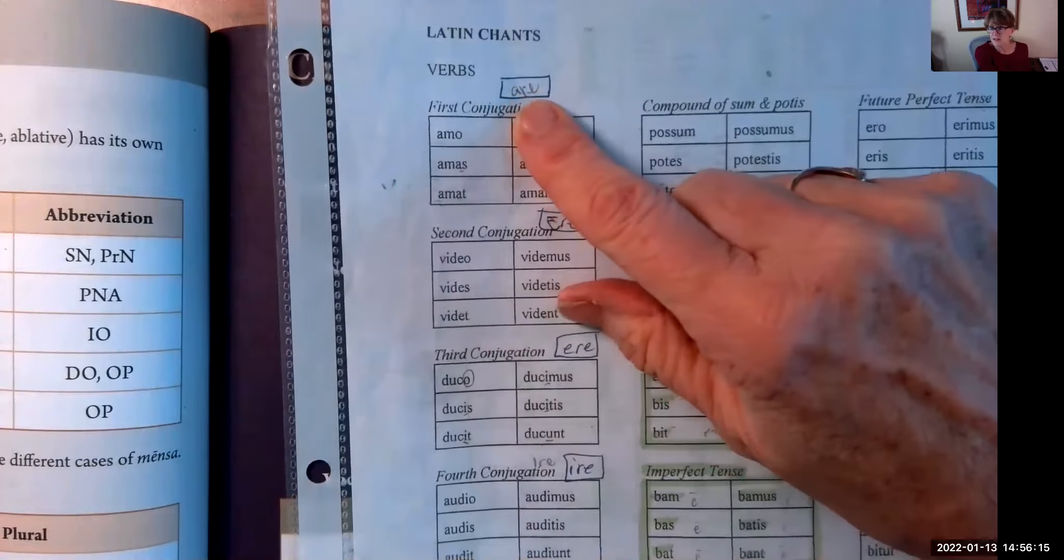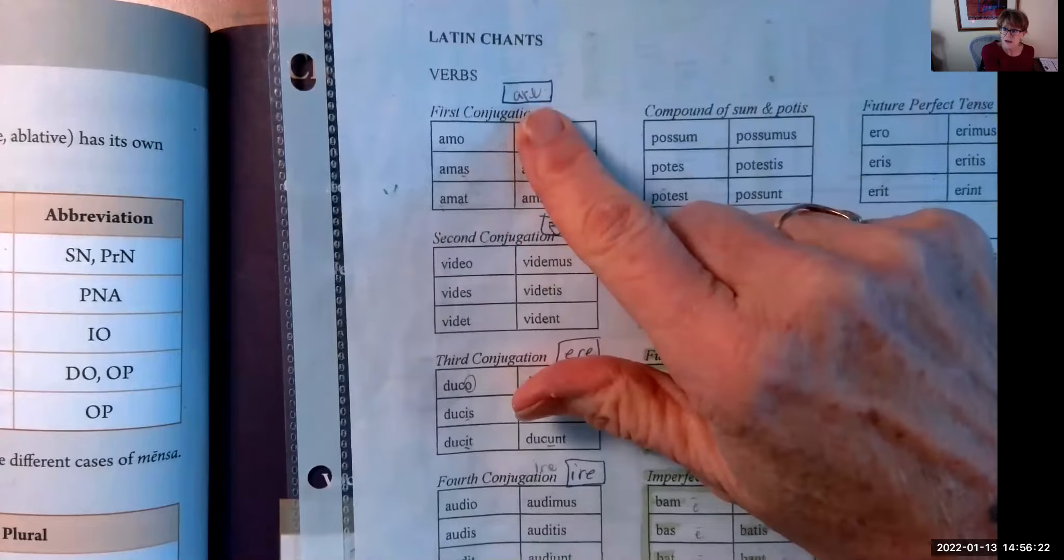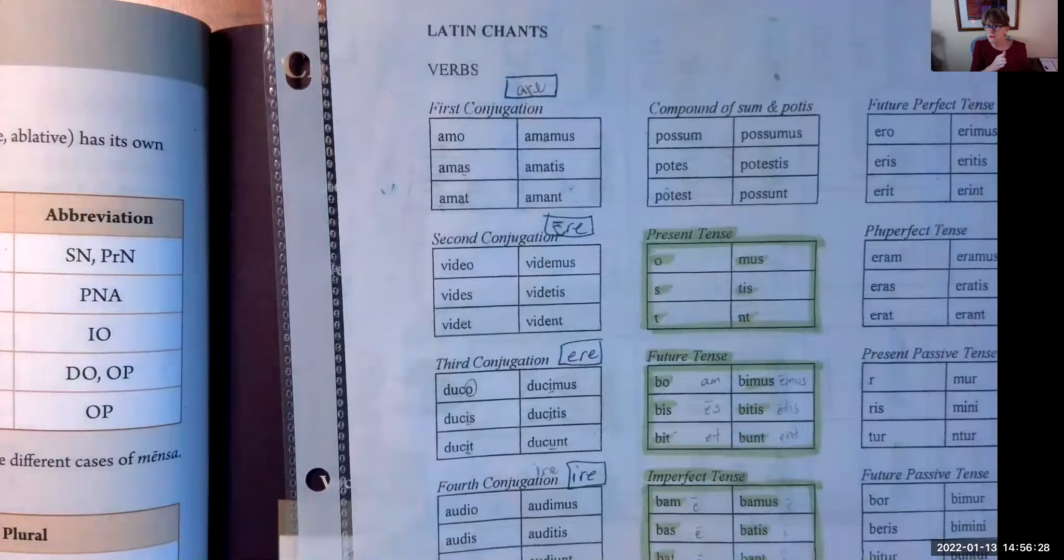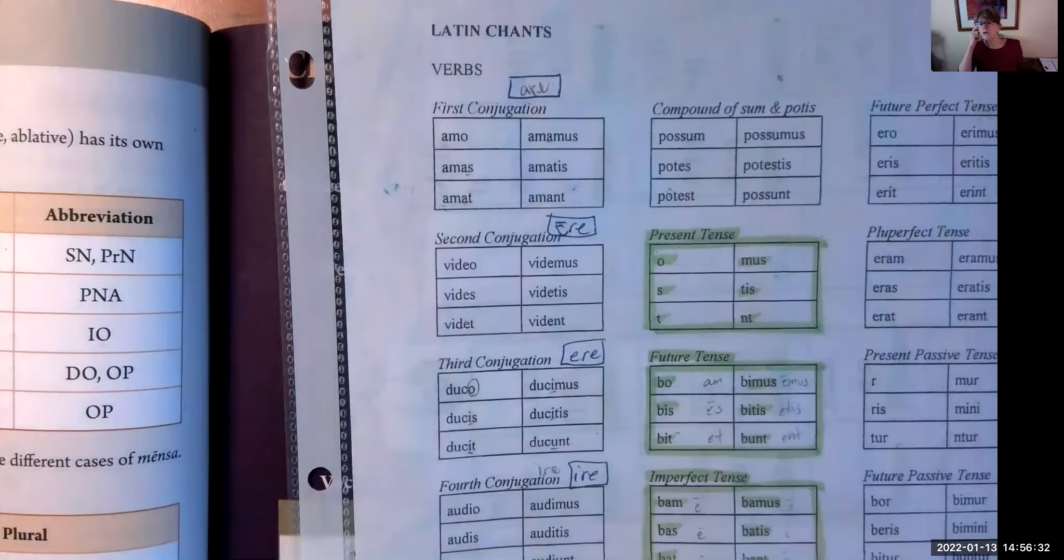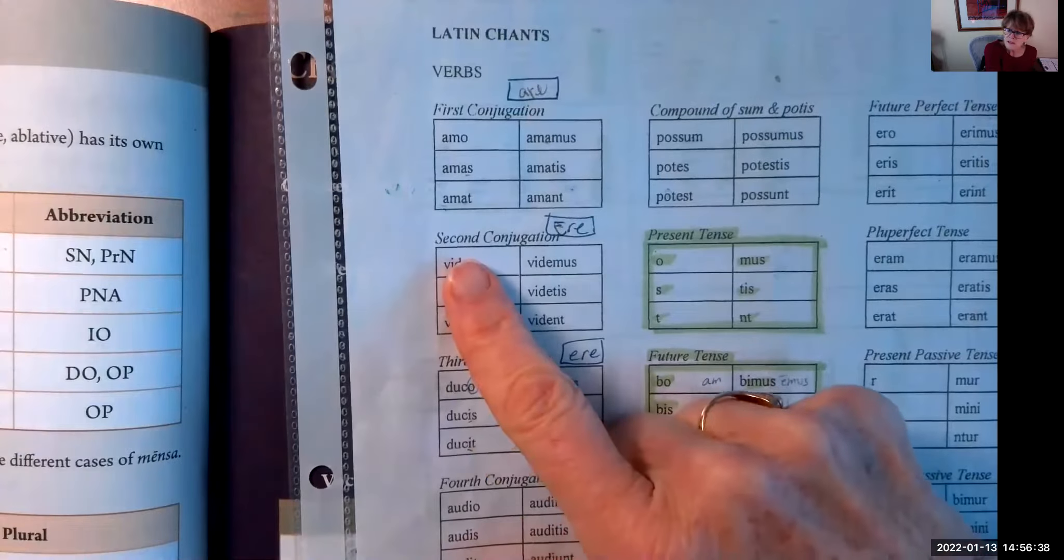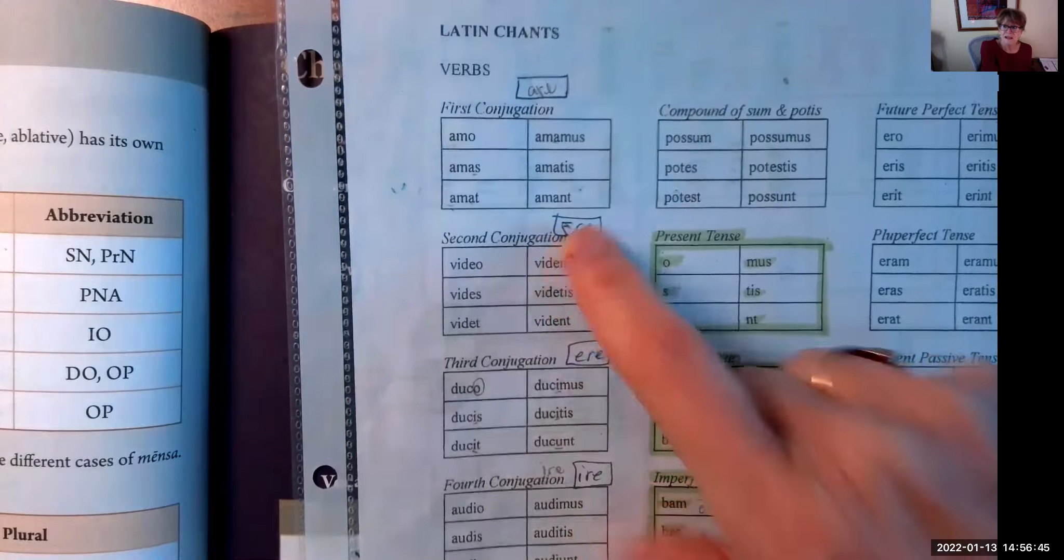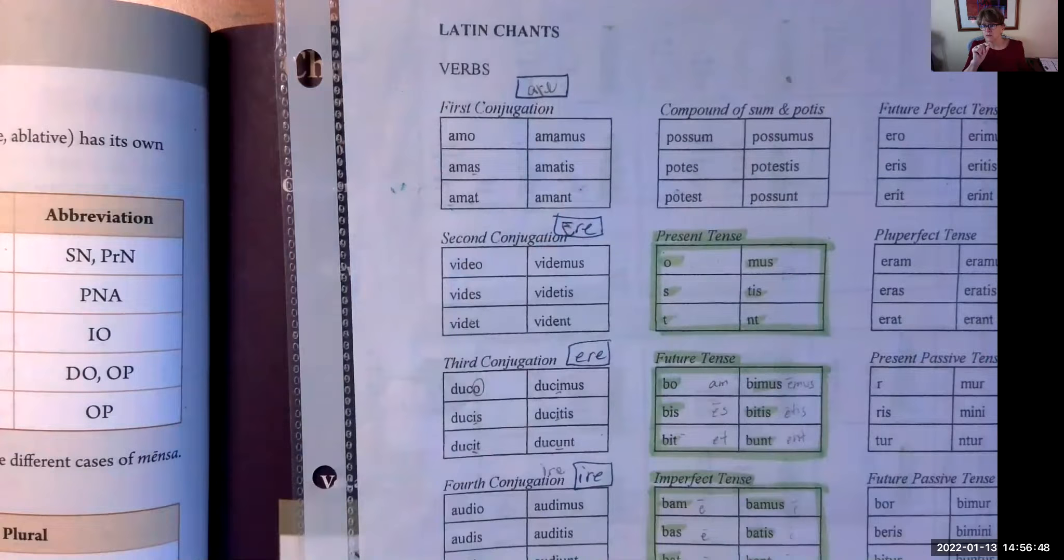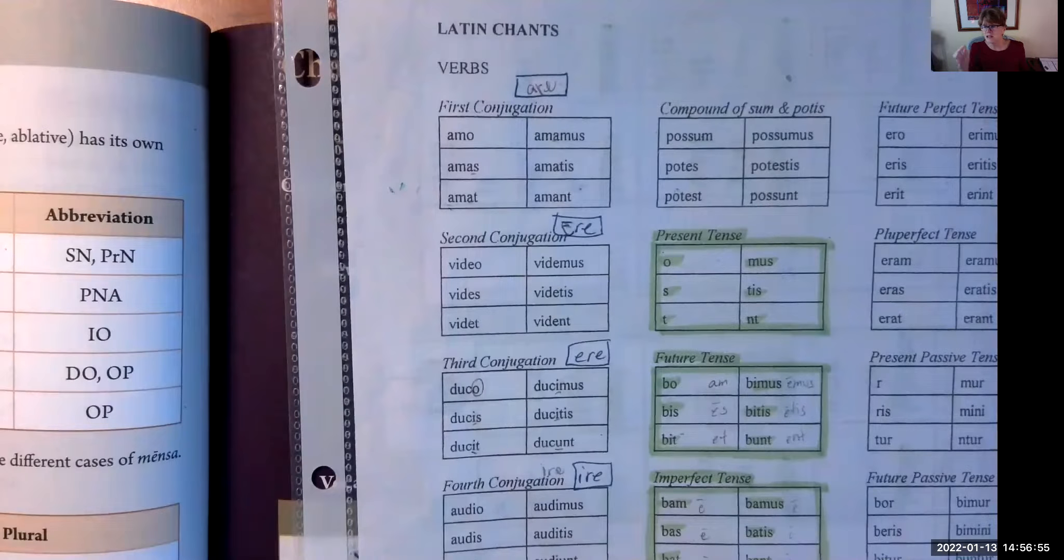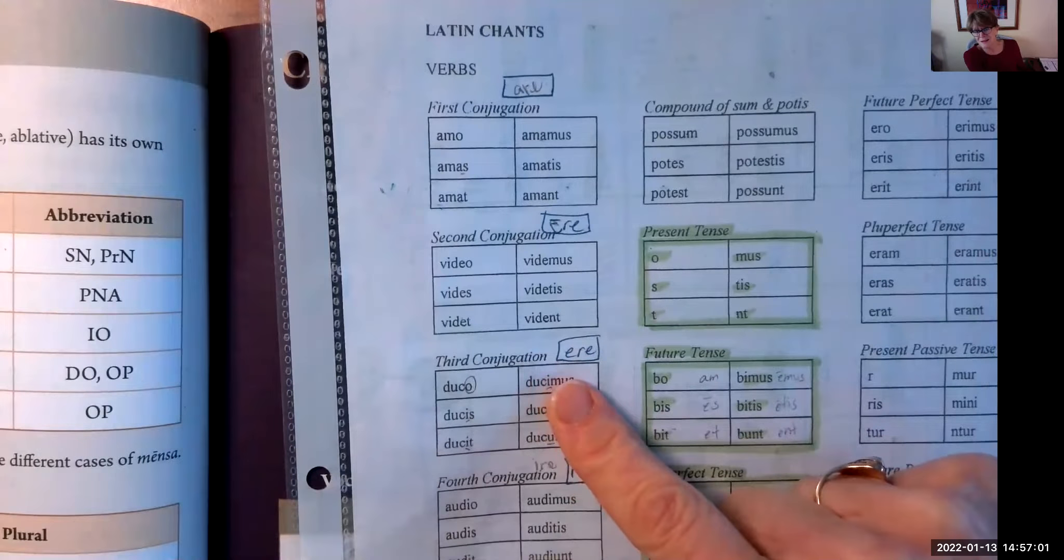When I say second conjugation, that means if you look on the back of these Latin chants, we actually have four kinds of verbs identified by their endings in the infinitive, the second principal part. The first kind of verb ends in A-R-E, those are the kind we learned from Chapters 1 to 13. Verbs like amo amare, do dare, intro intrare, and so on.